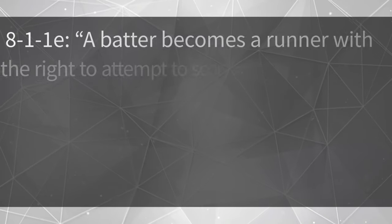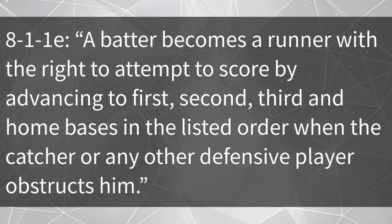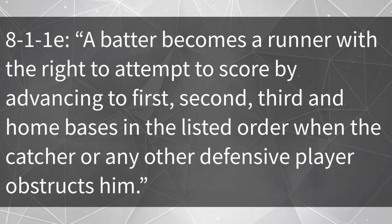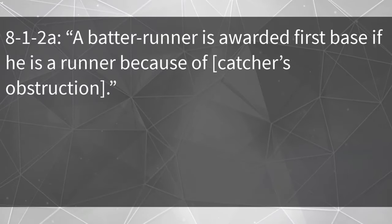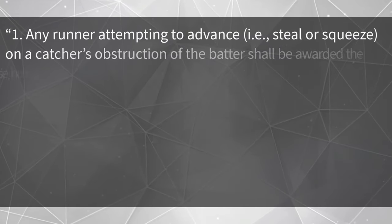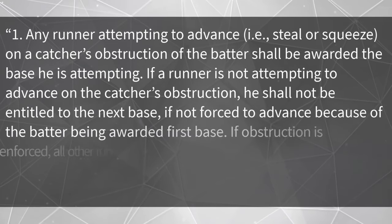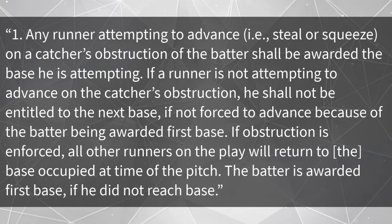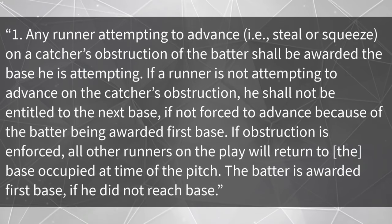Now let's discuss the enforcement of catcher's obstruction. Rule 8-1-1e: a batter becomes a runner with the right to attempt to score by advancing to first, second, third, and home bases in order when the catcher or any other defensive player obstructs him. Then rule 8-1-2a: a batter runner is awarded first base if he is a runner because of catcher's obstruction. So if the ball is not hit or simply fouled off, we are going to award the batter first base. Any runner attempting to advance — i.e., steal or squeeze — on a catcher's obstruction of the batter shall be awarded the base he is attempting. If a runner is not attempting to advance on the catcher's obstruction, he shall not be entitled to the next base if not forced to advance because of the batter being awarded first base.